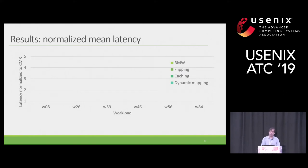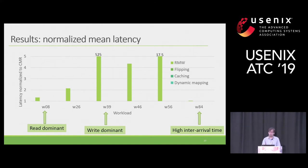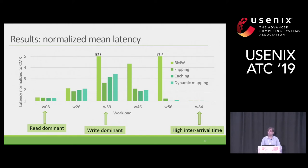The other metric is mean latency normalized to a conventional drive. Read-modify-write shows more mixed results: for some cases the latency increase was not too bad, but for many cases it is really bad. For cases like W39 and W56, we see a horrible latency increase. Our algorithms — flipping, caching, and dynamic mapping — help reduce that increase in latency. For the case of W56, which had very bad latency, we could reduce it and make it very close to the latency of a conventional drive.